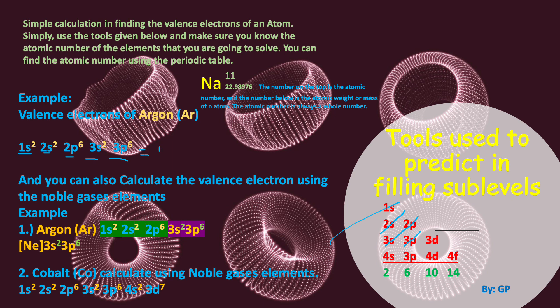Let's count all the electrons from the superscripts: 2 + 4 + 10 + 12 = 18. So argon has 18 electrons, which matches its atomic number of 18. You can find argon in group 18, which is the noble gas group.